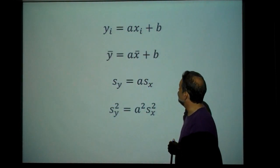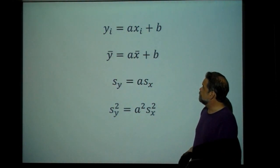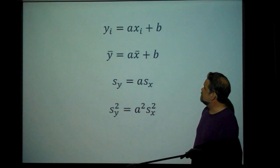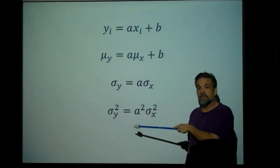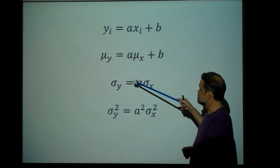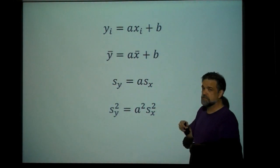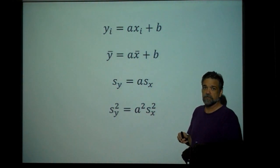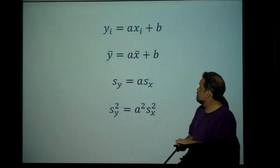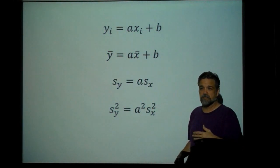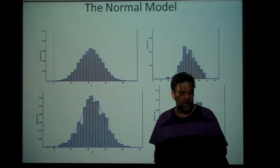Now let's talk about the normal model. Before we do, note that the prior rules are true for all population parameters like mu and sigma, and also true for sample statistics as well. Whether it's parameters or statistics, the way you calculate the mean and standard deviation is exactly the same.